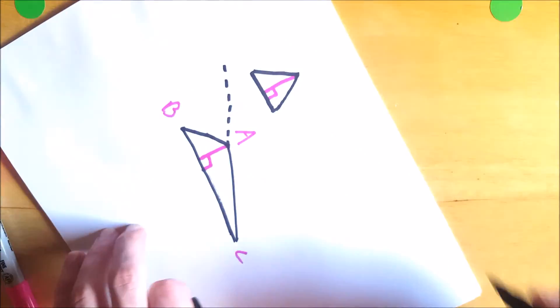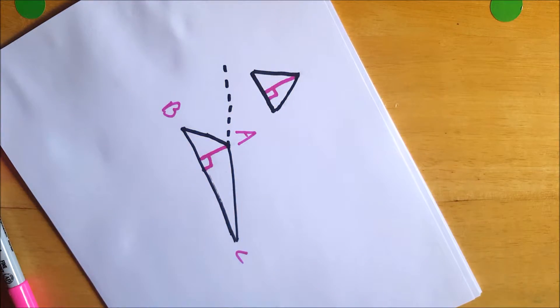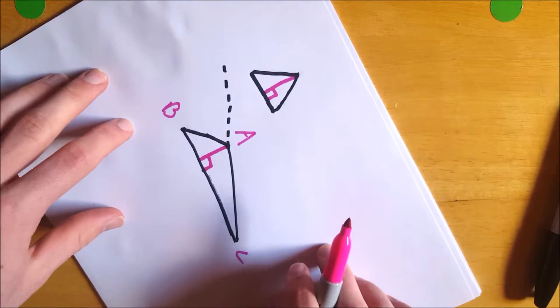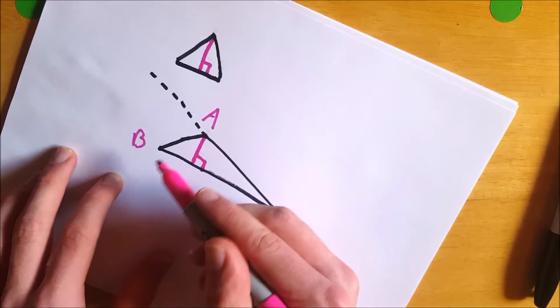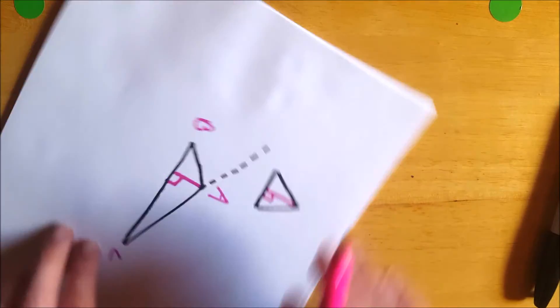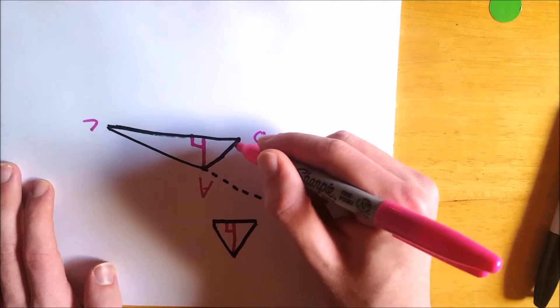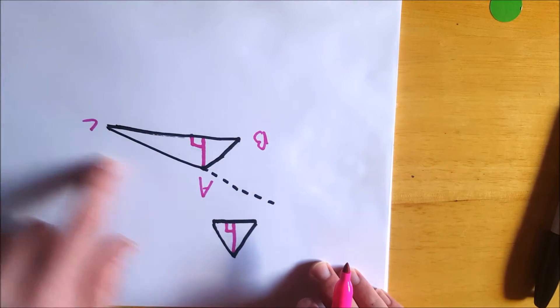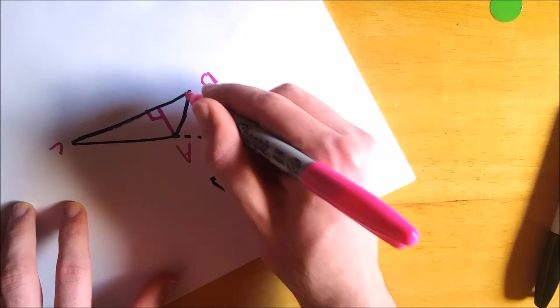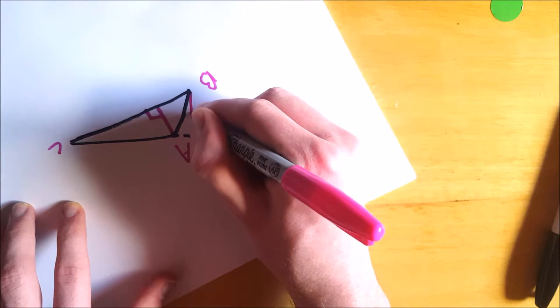It's a little kind of bad, but so then we want to drop the altitude from B, from vertex B down to the line containing side CA. So that's going to be something like that.